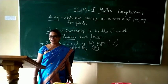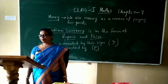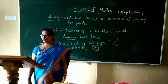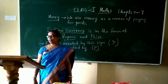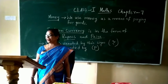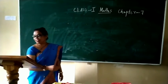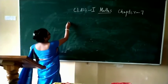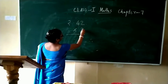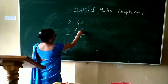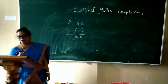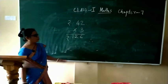Children, solving another problem. If you want to buy 3 Kinder Joys, how much money do you need? If a Kinder Joy costs Rupees 42, that means you have to multiply 42 Rupees by 3. 3 Kinder Joys cost 42 Rupees each. 42 multiplied by 3 — 3 times 2 is 6, 3 times 4 is 12 — so you need Rupees 126.